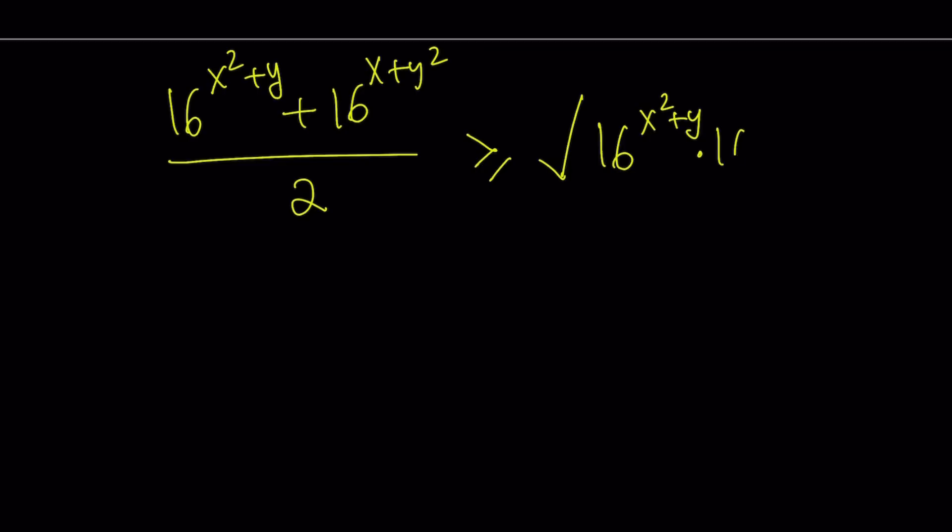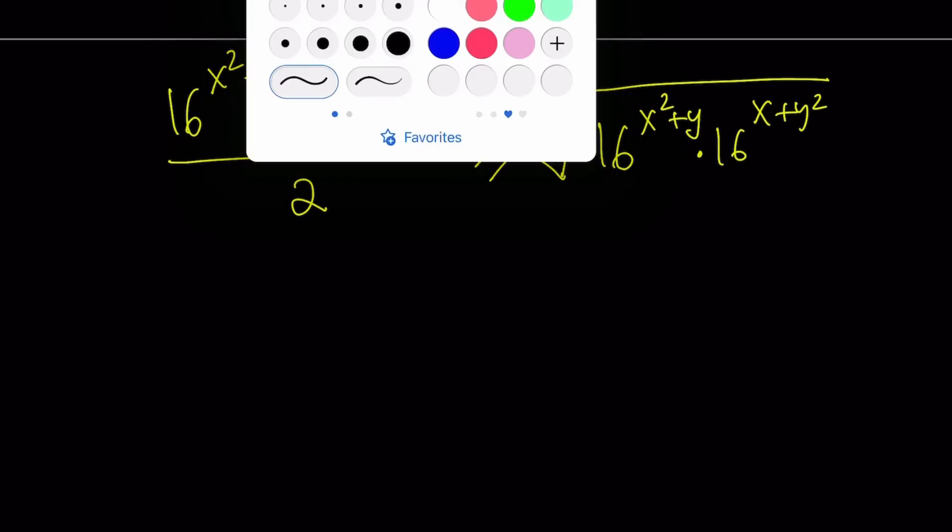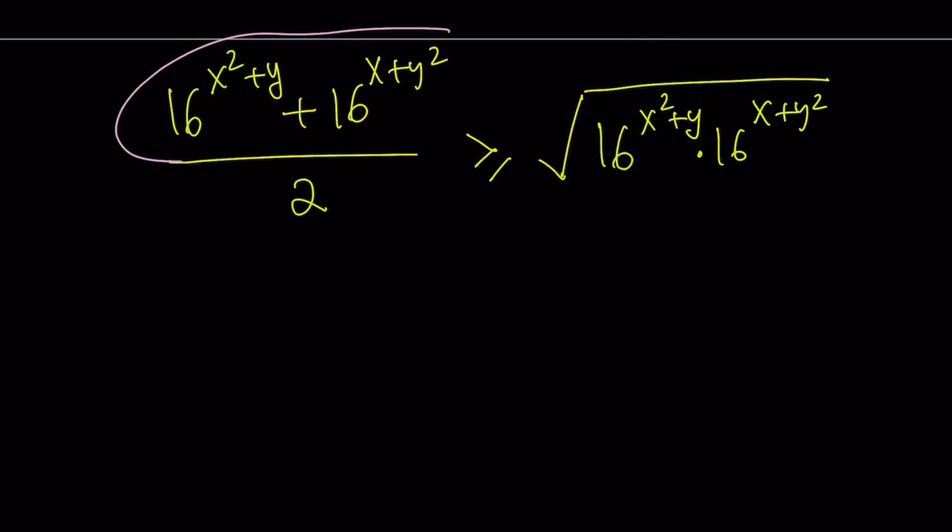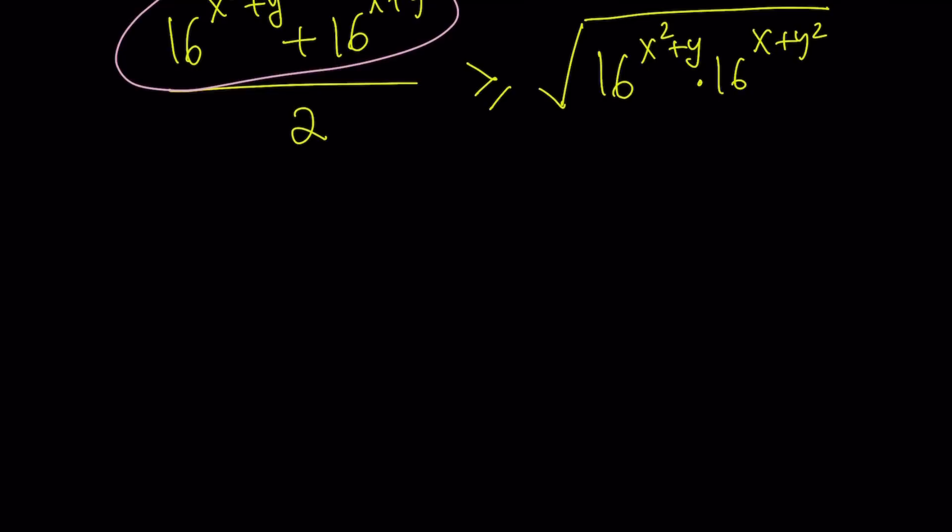And this is important. The motivation behind this is if you use AM-GM, you're going to be able to multiply these two quantities together. And you know their sum, but you don't know anything about their product. But when you multiply them together, you have the same base, so you can use rules of exponents, add the exponents, and write it with a single base. Make sense? So that's going to be a good thing. And also, we do know the value on the left-hand side.